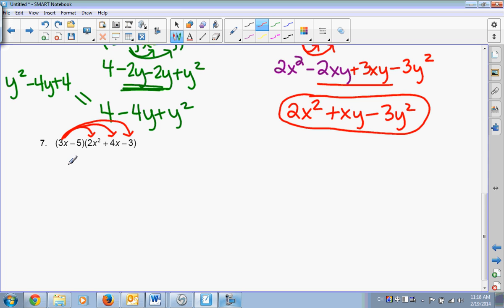So, 3x times 2x squared? 6x cubed. Good. 3x times 4x? 12x squared. Good. 3x times negative 3? Negative 9x. Awesome. Okay. Now we switch to our second term in our binomial. So, negative 5 times 2x squared? Negative 10x squared. Negative 5 times 4x? Negative 20x. And negative 5 times negative 3? Positive 15. Okay.